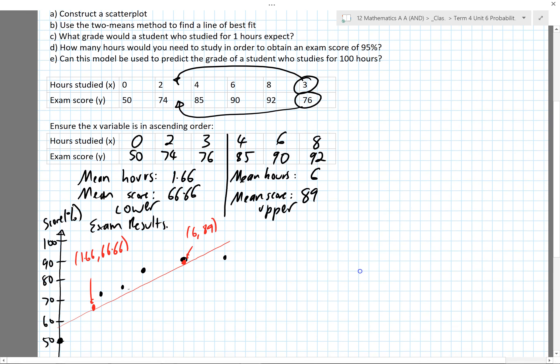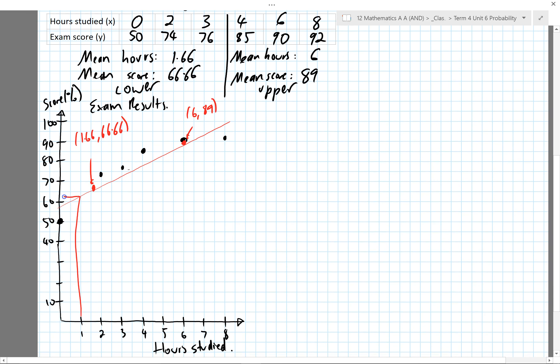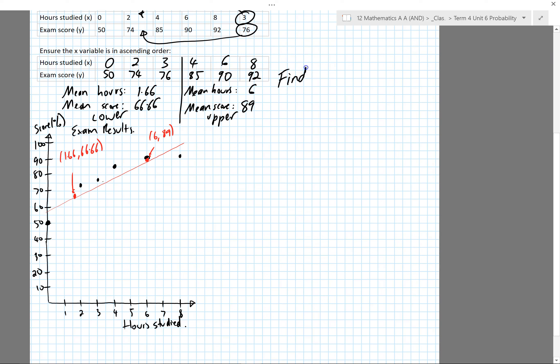That would be my line of best fit between hours studied and exam results. Then I could realistically use that line to answer questions like what grade would a student who studied for one hour expect. I'd read up off this graph. We want to be a bit more sophisticated than that. We're going to find the equation of the line of best fit of the form y equals mx plus c. Remember, m is the gradient and c is the y-axis intercept.